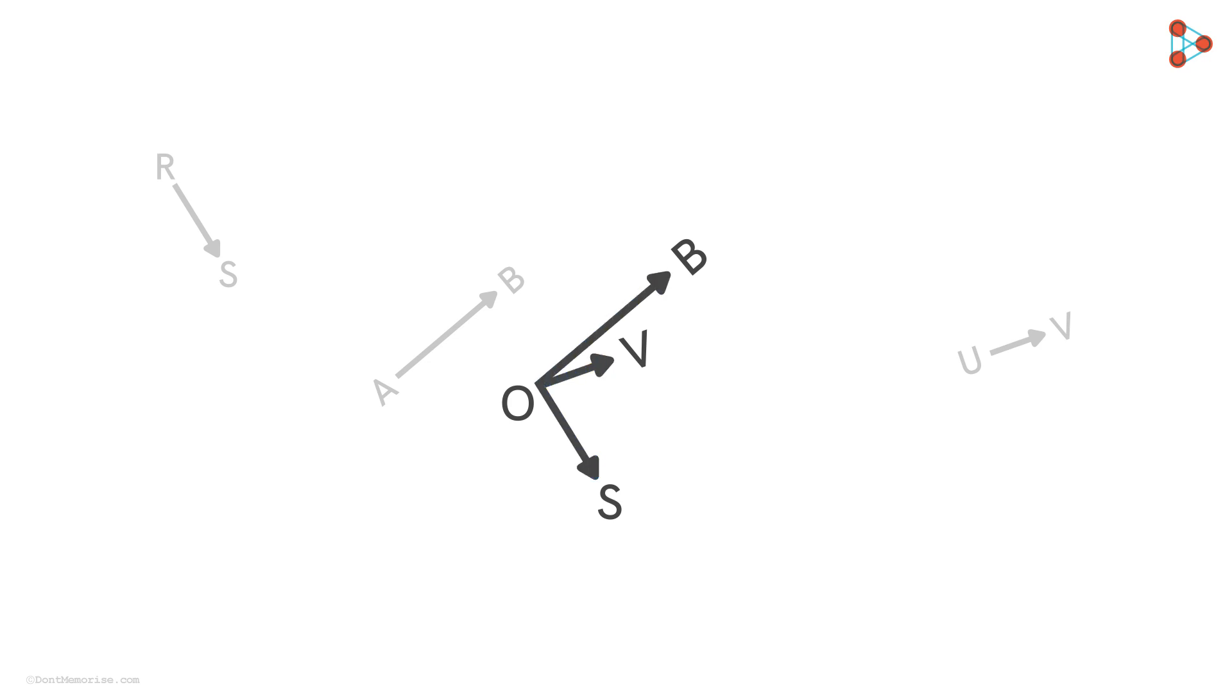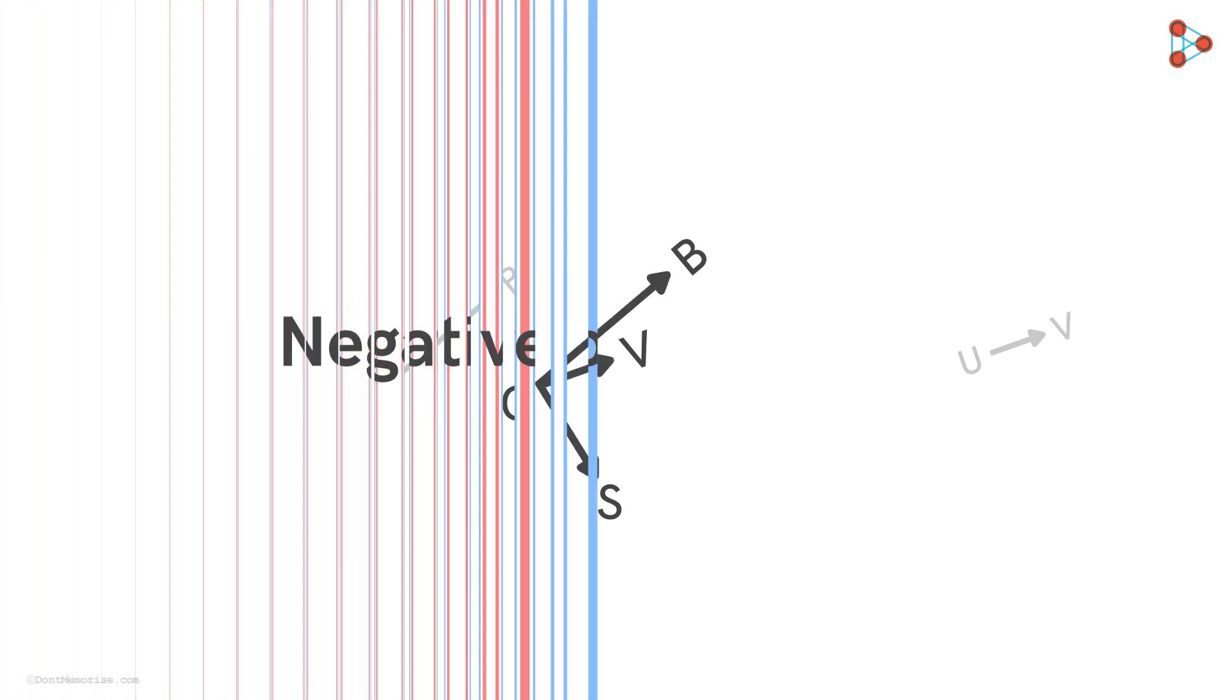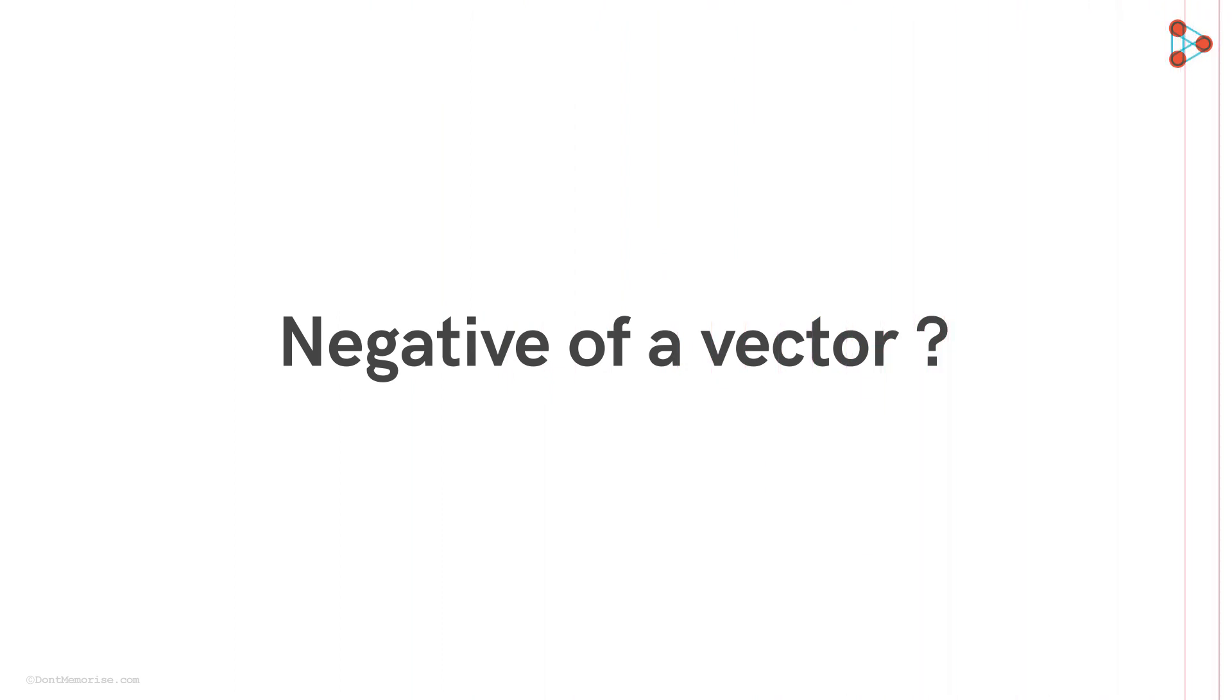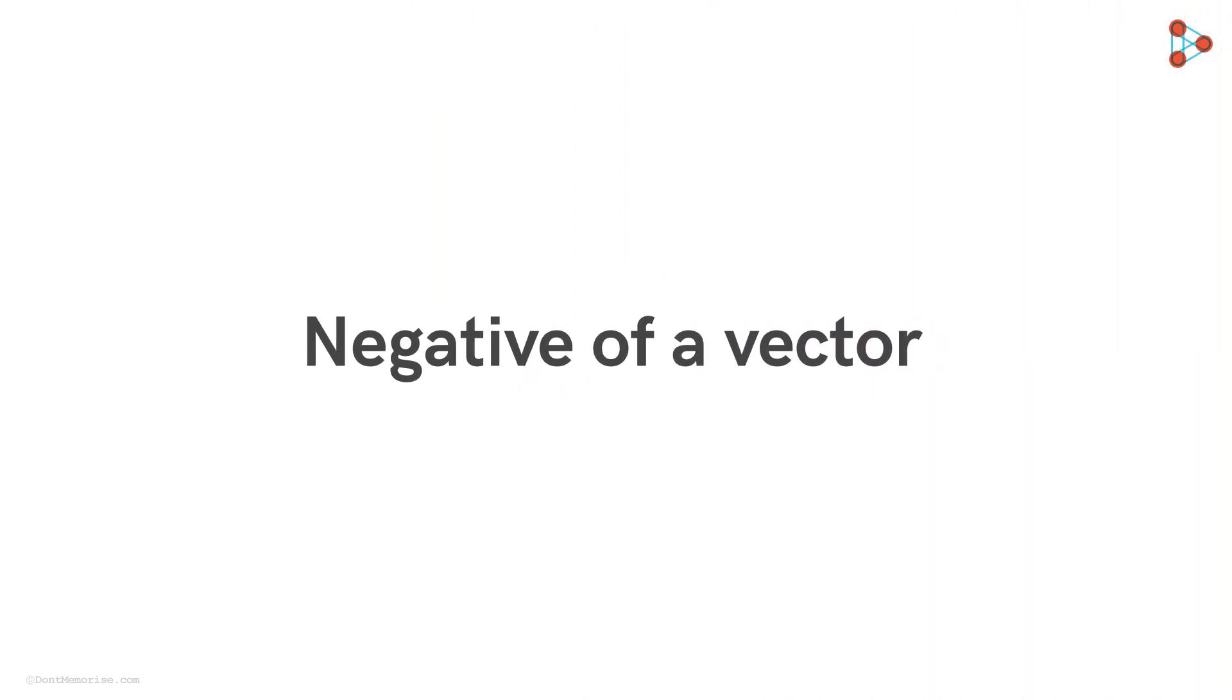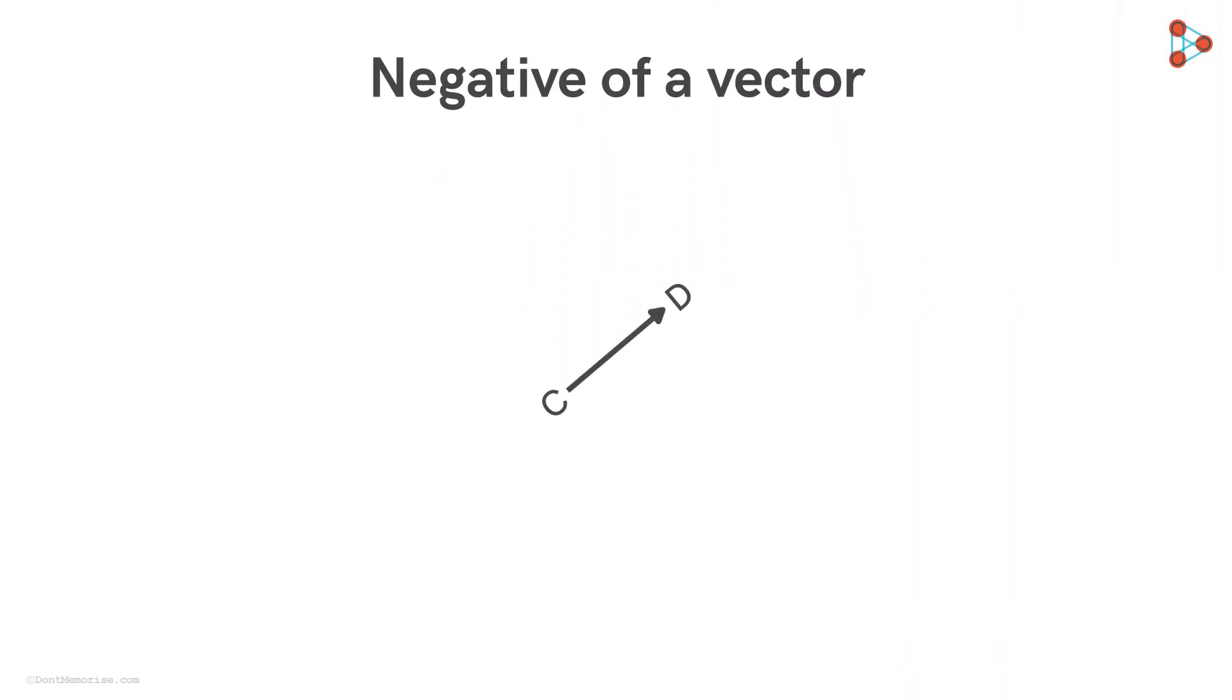Now let me ask you a question. What will be the negative of a vector? For example, let's take the vector CD here. We know a vector is defined by two things. Its magnitude that is its strength and its direction.